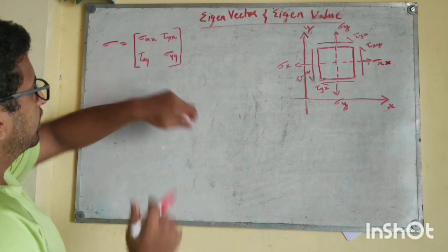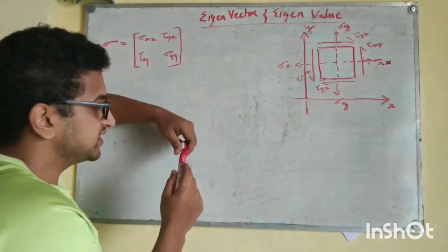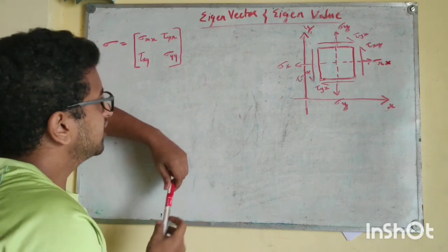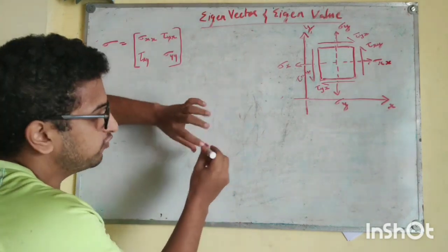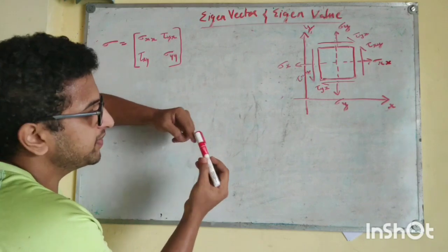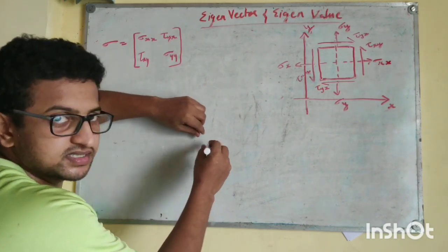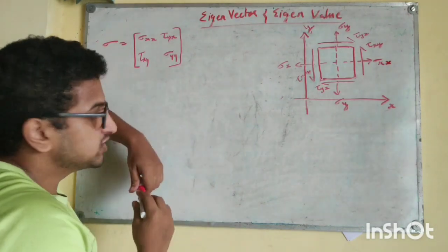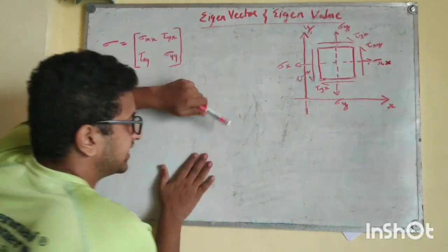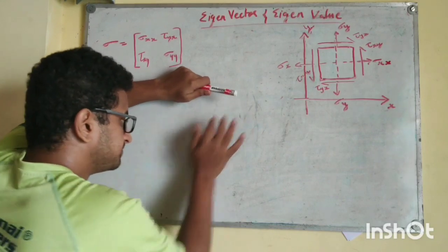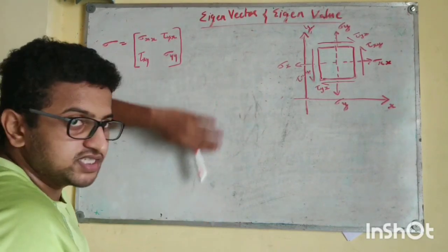Sigma is called normal stress and tau is called shear stress. Normal stress is when a force is applied perpendicular to the plane — the force divided by the perpendicular cross section gives normal stress. Shear stress is when the force is applied tangential to the plane, like this. So this is called shear stress.